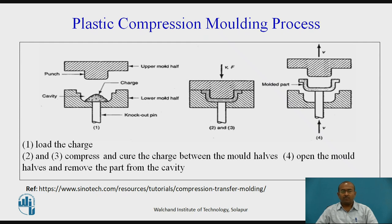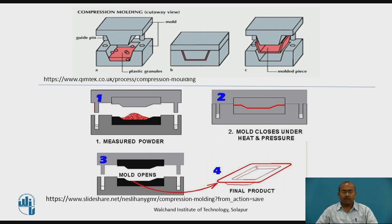After opening the mold halves, the removal of the finished product is carried out by the knockout pin, shown at the bottom of the part in the diagram. The knockout pins may vary in number as per the requirements and specifications of the job. Thus, in three stages, the conversion from raw material to finished product can be easily understood with the referred diagram.